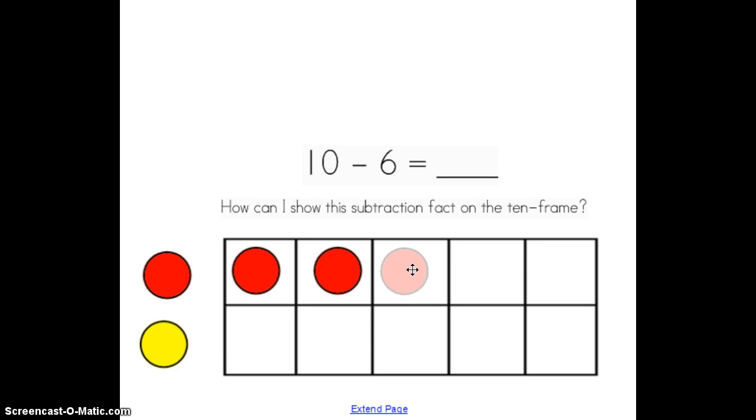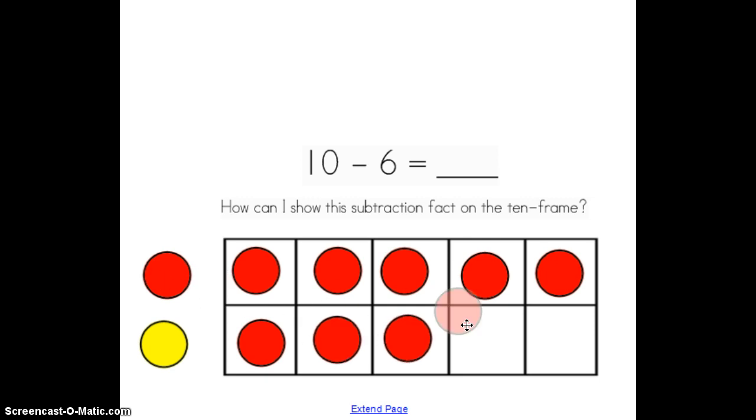When I'm using a 10 frame, I don't even have to count because I know that when my 10 frame is full, that I will have 10. Okay, so now I have 10 counters representing the 10 in my number sentence. Then it says minus 6, and remember subtraction means take away. So it's 10 take away 6. So now I'm going to take away 6 counters. Count with me.